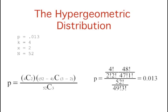k, the number of successes in the population, is 4 because there are 4 aces in the deck. x, the number of successes in the sample, is 2 because the question asks about the probability of obtaining 2 aces.